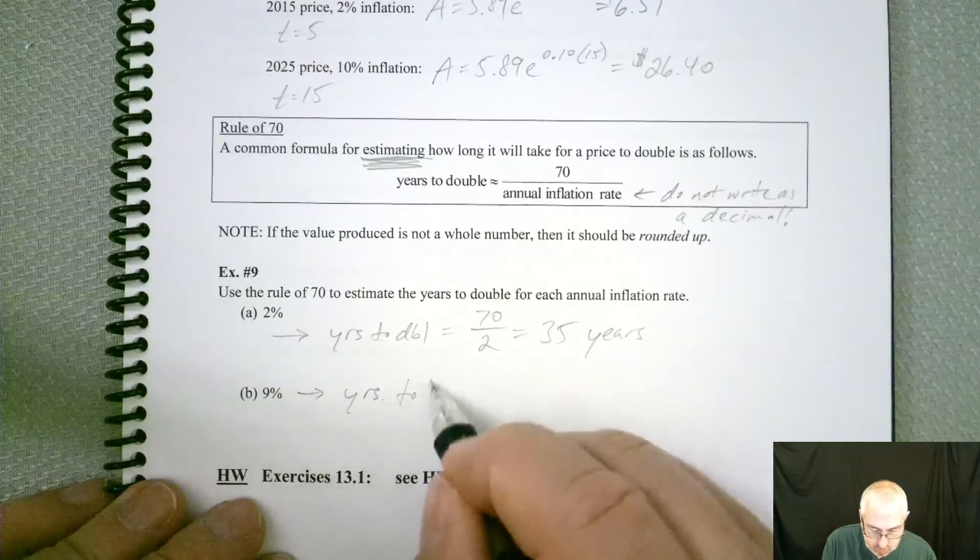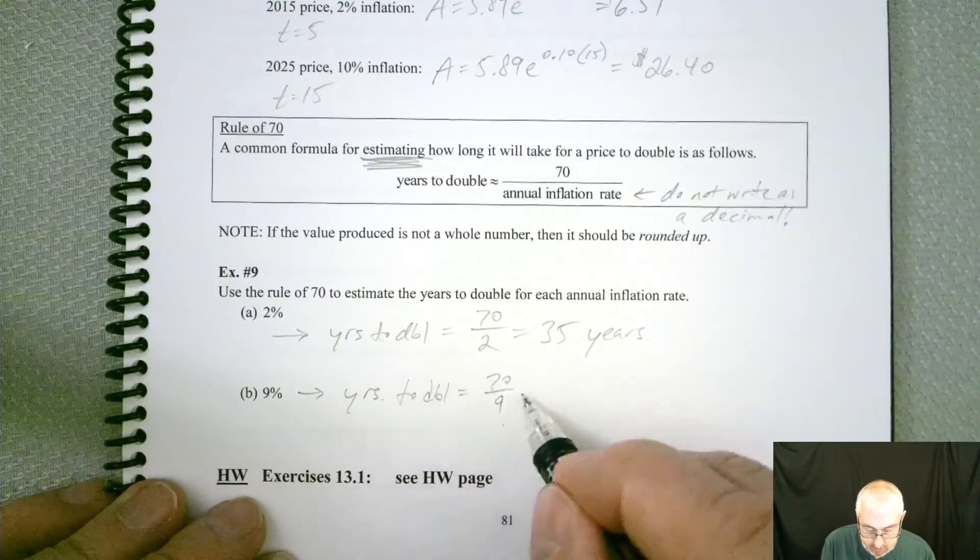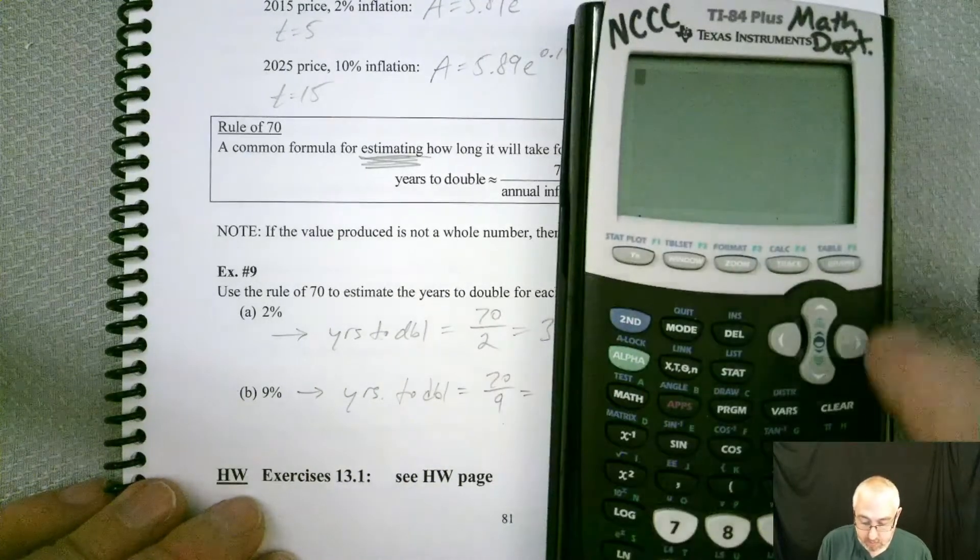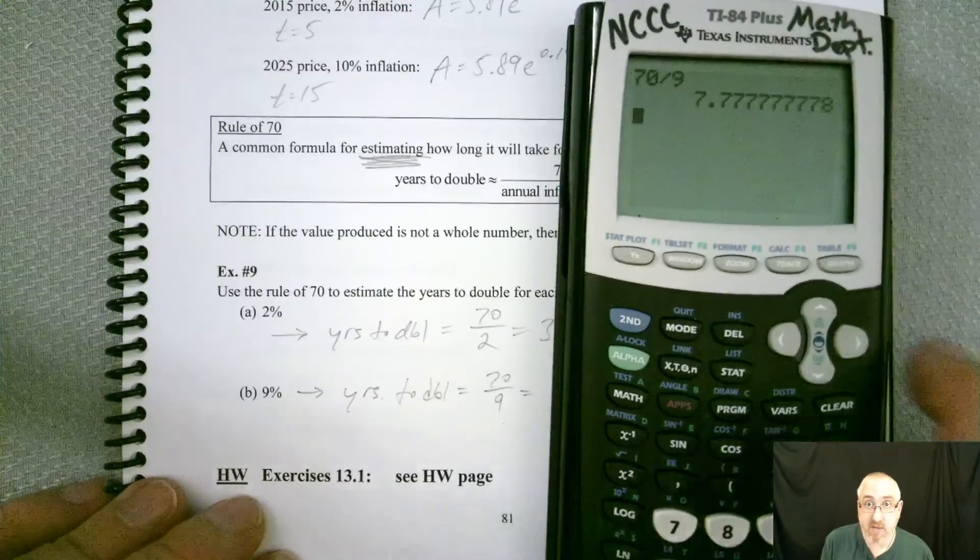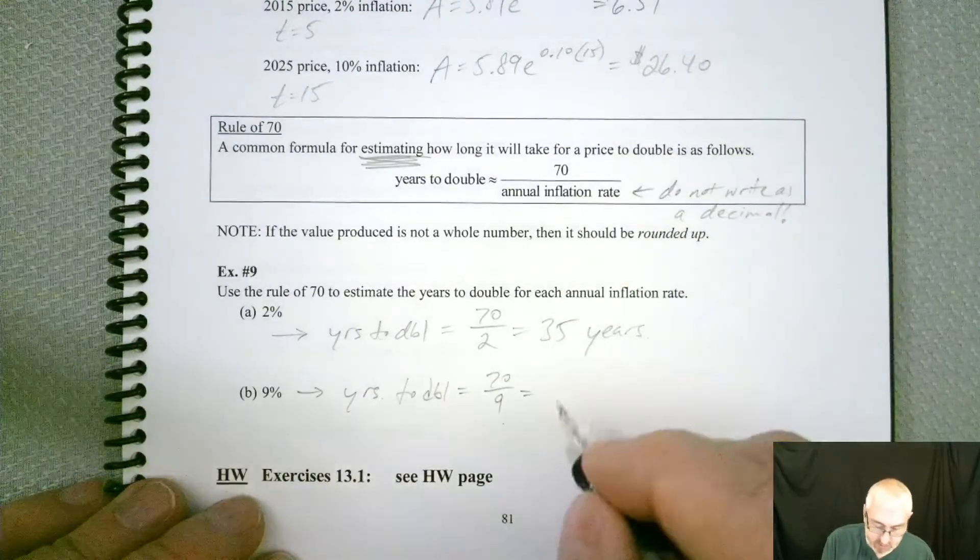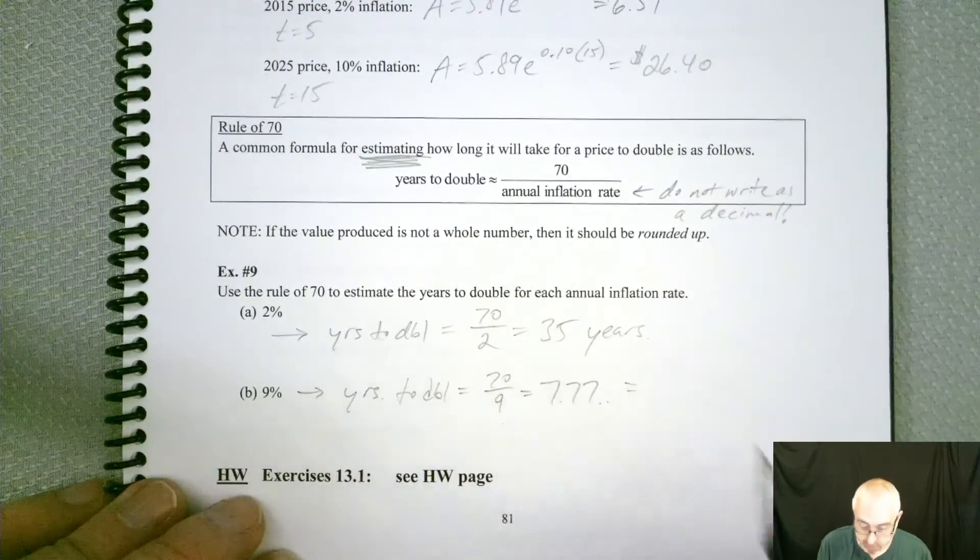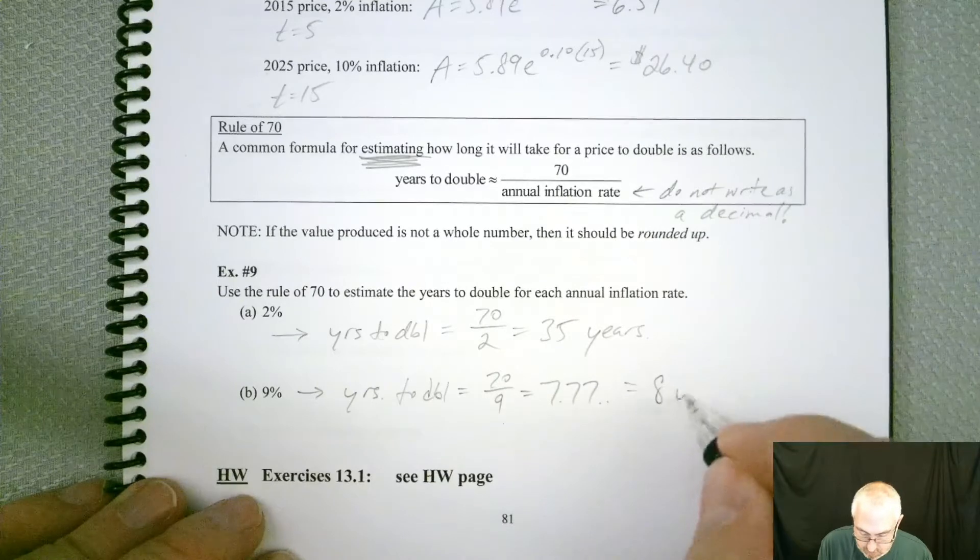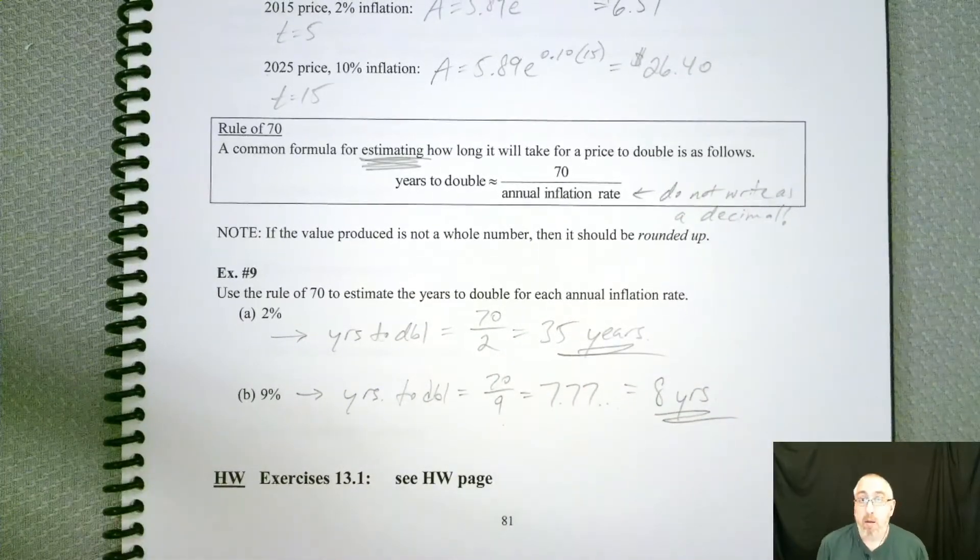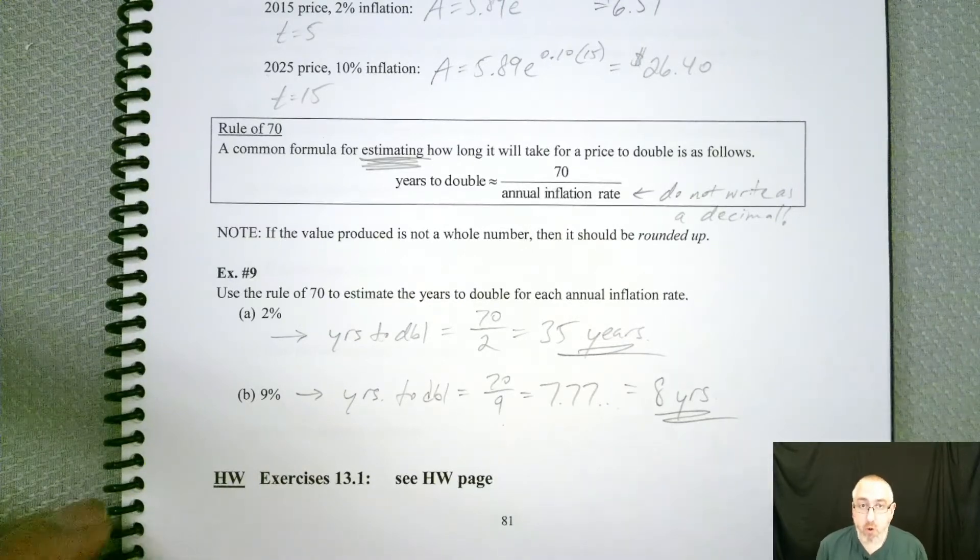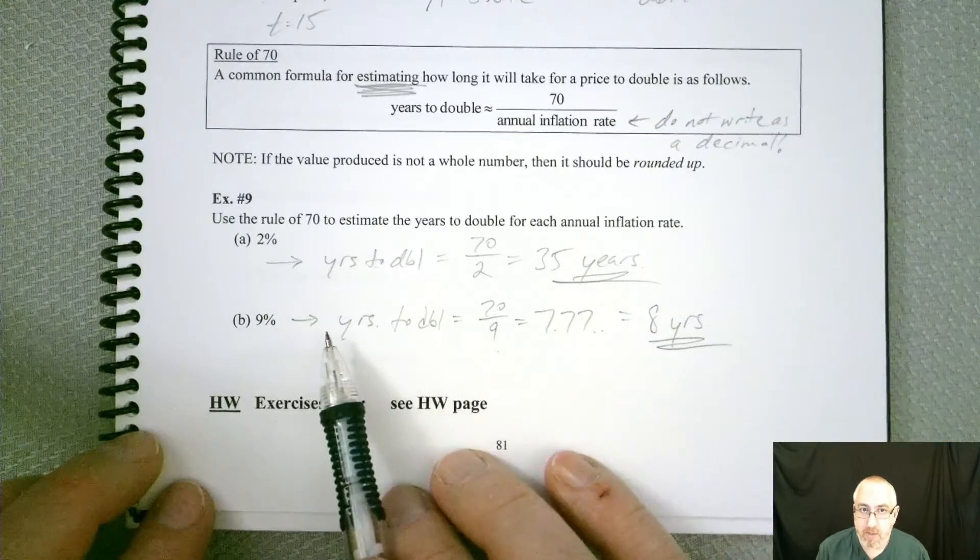And so for this one, years to double should be 70 divided by 9. And if we divide that by 9, lots of 7s. So in this case, we want a whole number. So we would round it up to 8.